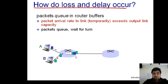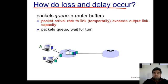Let's understand queuing delay with an example. This is the queue, and the first packet — the blue one — is about to be transmitted. The queuing delay for this blue packet is zero because it is the first packet to be transmitted. But if a second packet arrives while the blue packet is still being transmitted, the second packet has to wait, and that waiting time is its queuing delay.